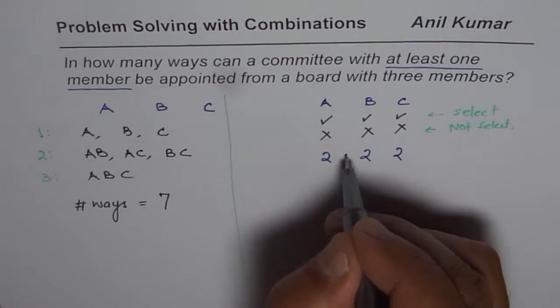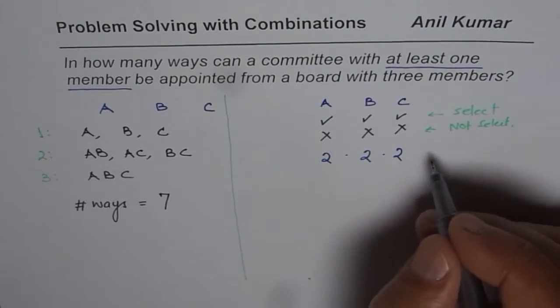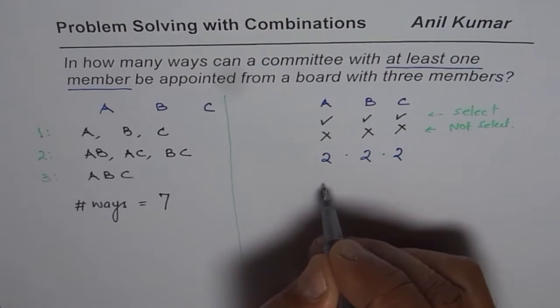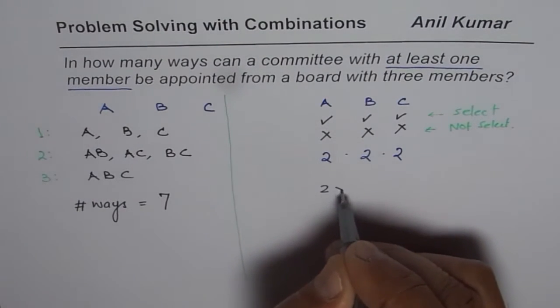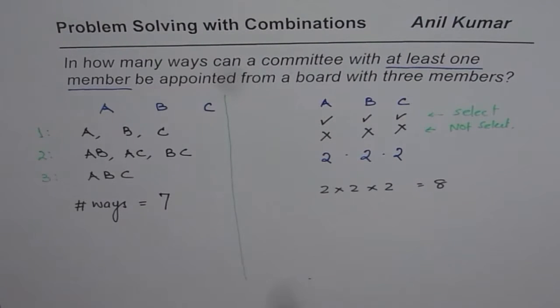So when we are trying to find how many ways things, then using the fundamental principle, they get multiplied. So once you multiply them, that is to say we do two times two times two, we get eight. Or you can say two cubed. So we get eight as our answer.